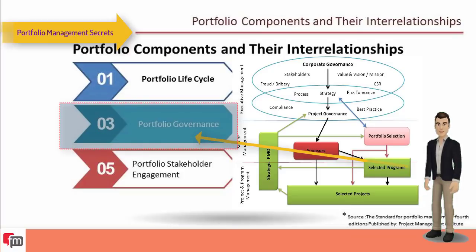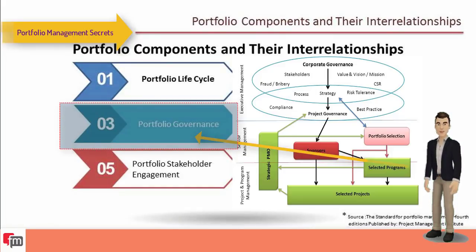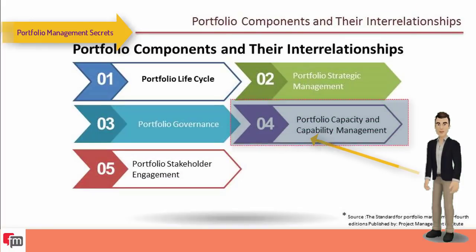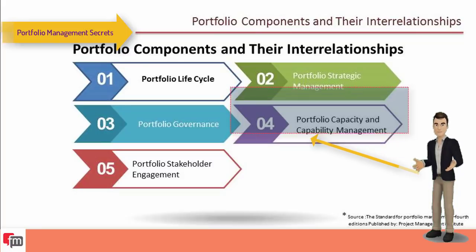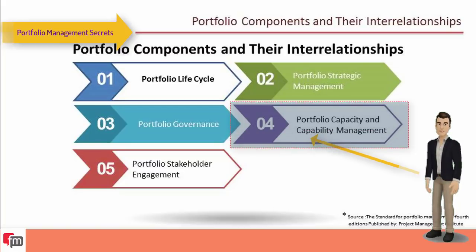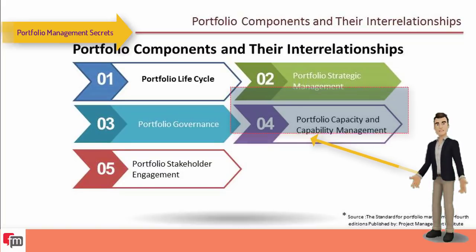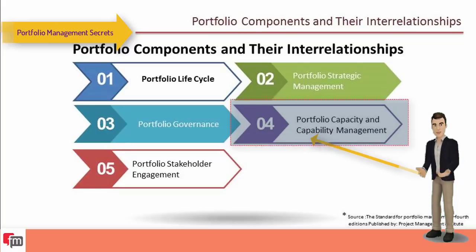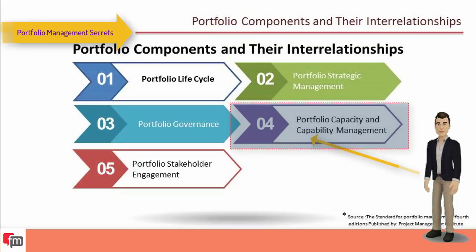Through open and transparent governance — including processes for categorization — stakeholders are more likely to accept decisions and agree with the process. Portfolio capacity and capability management balances the selection of portfolio components and their implementation roadmap against the organization's current capacity and capability, with the potential for bringing in additional resources.